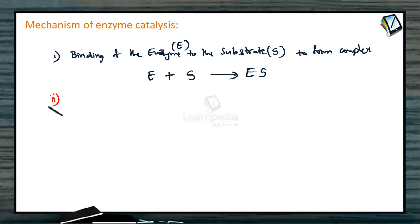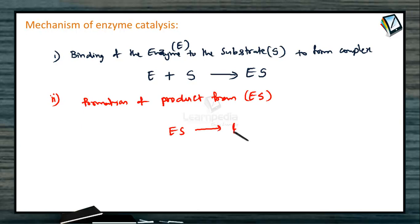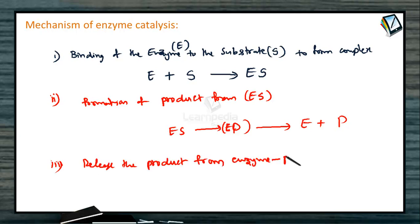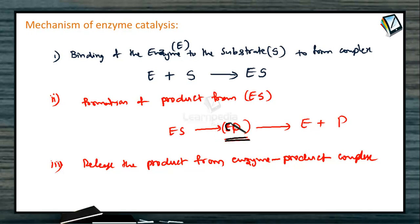The second step is the formation of the product from the intermediate complex ES. This ES complex forms the corresponding enzyme-product complex. Finally, the third step is the release of the product from the enzyme-product complex. The enzyme-product complex is formed from the enzyme-substrate complex by undergoing conformational changes, and it releases the enzyme and product separately, so the catalyst can be reused.